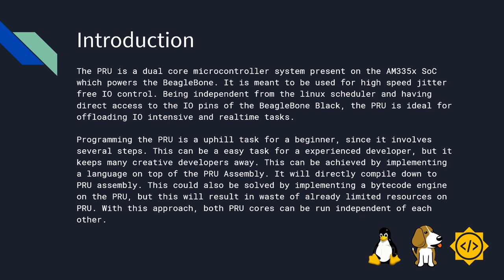Programming the PRU is an uphill task for a beginner since it involves several steps. This can be an easy task for an experienced developer, but it keeps many creative developers away. This can be achieved by implementing a language on top of the PRU assembly. It will directly compile down to PRU assembly. This could also be solved by implementing a bytecode engine on the PRU, but this will result in waste of already limited resources on the PRU. With this approach, both PRU cores can be run independent of each other.